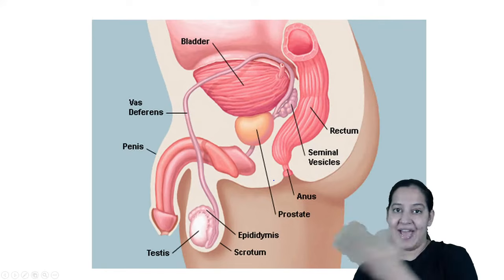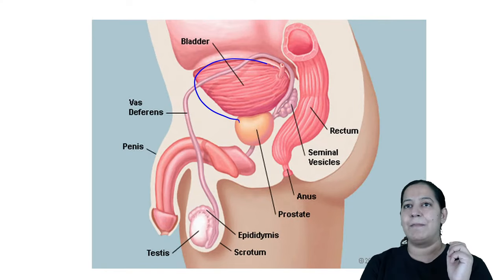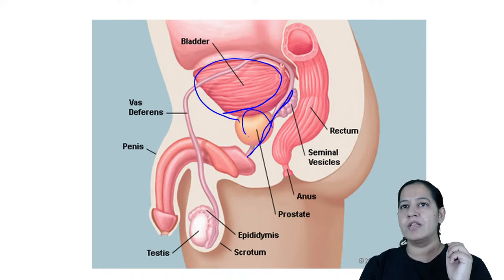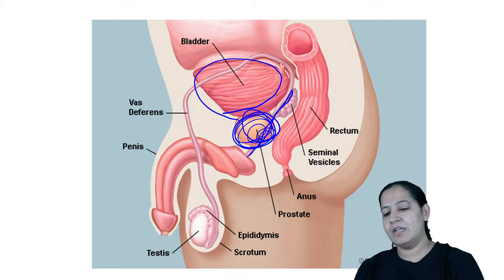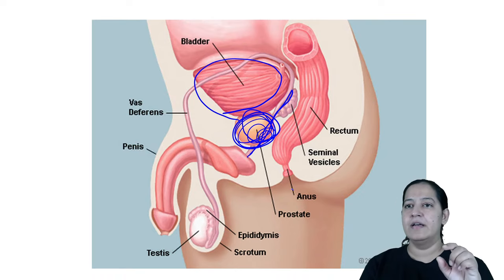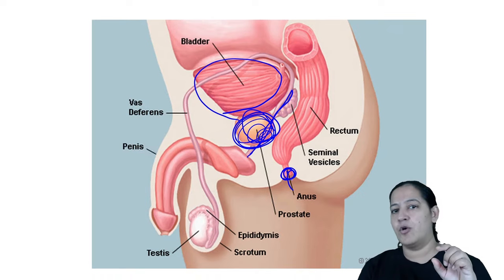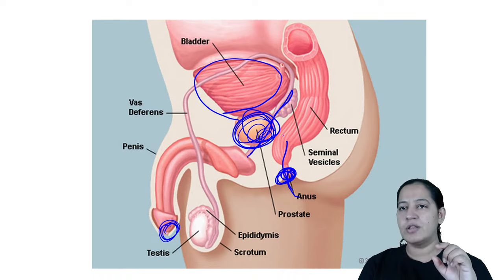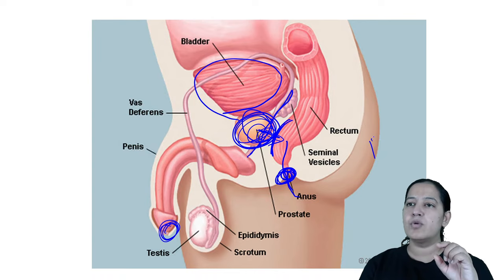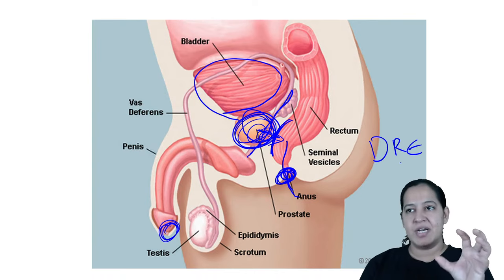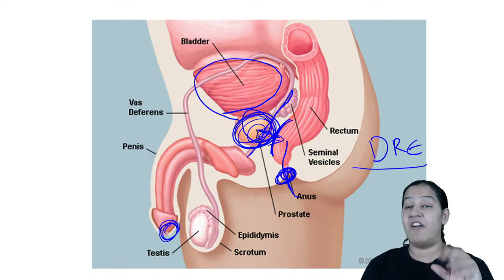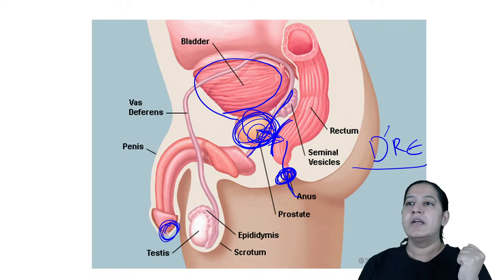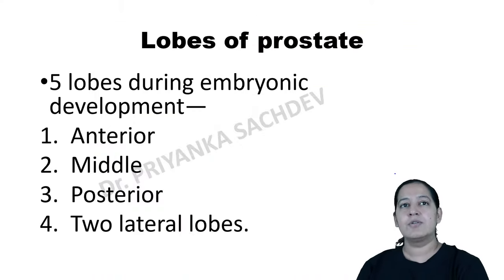In the lateral view, you can see the bladder, the urethra coming out, and the prostate surrounding the urethra. The prostate can be palpated via the anal opening — by inserting a finger on the anterior wall of the rectum, the posterior lobe of the prostate can be palpated. This is known as digital rectal examination (DRE). If the prostate is enlarged and a benign or malignant tumor is suspected, DRE is performed.